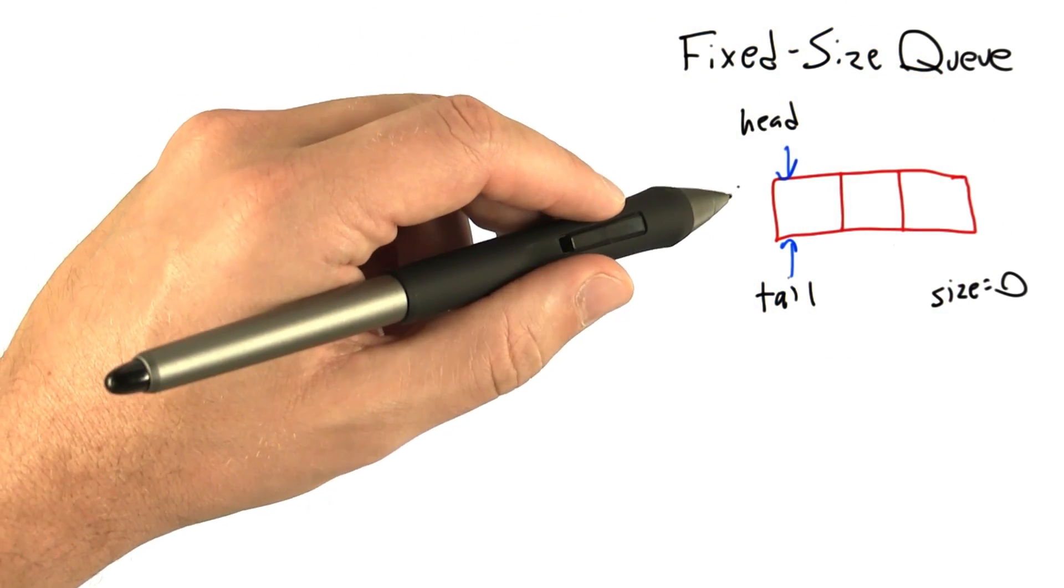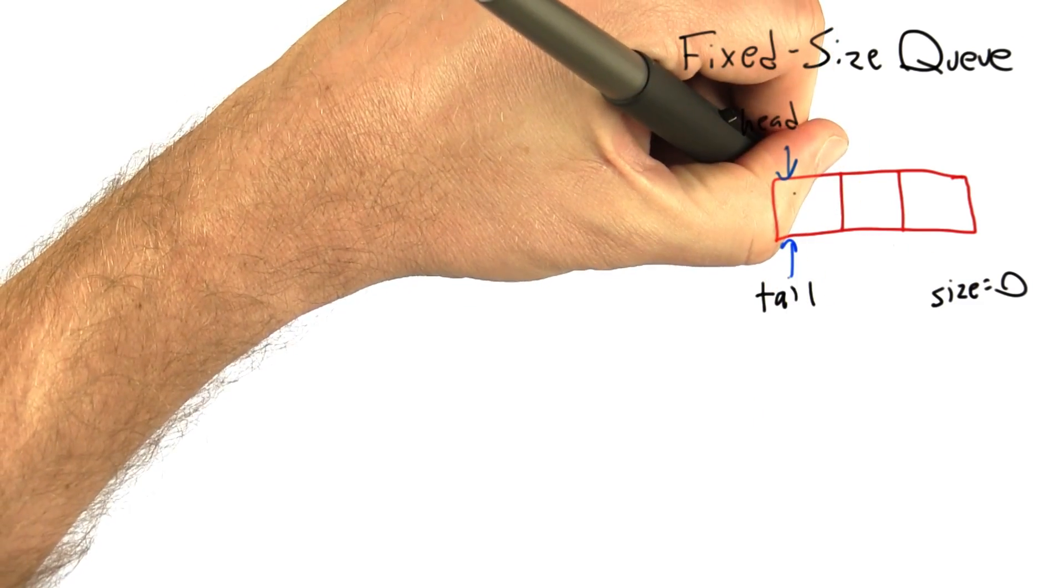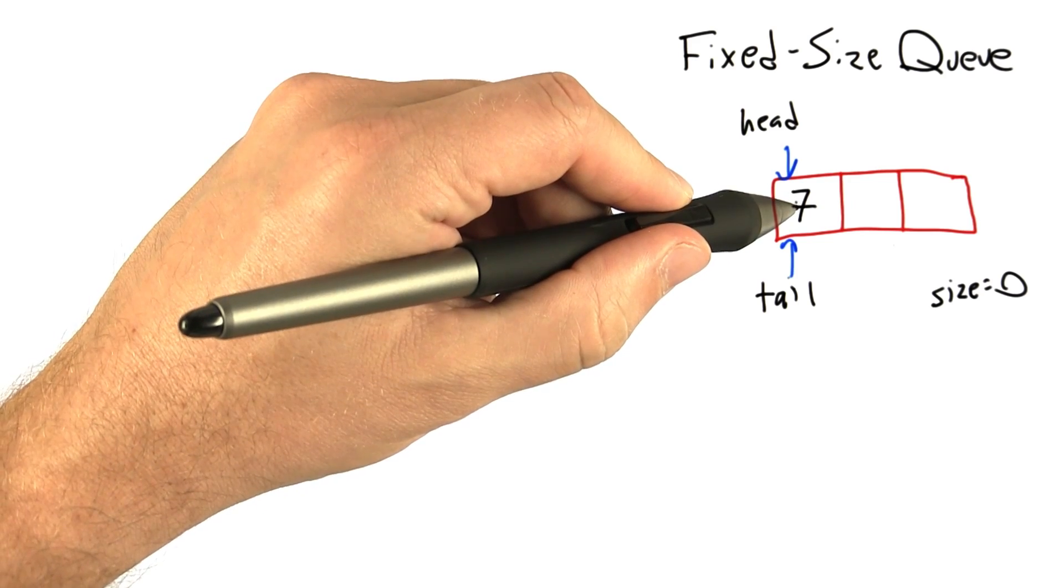To enqueue an item, we first check if the queue is full. Here it's not because its size is 0. We go ahead and put the item, let's say the number 7, in the queue element pointed to by the tail.